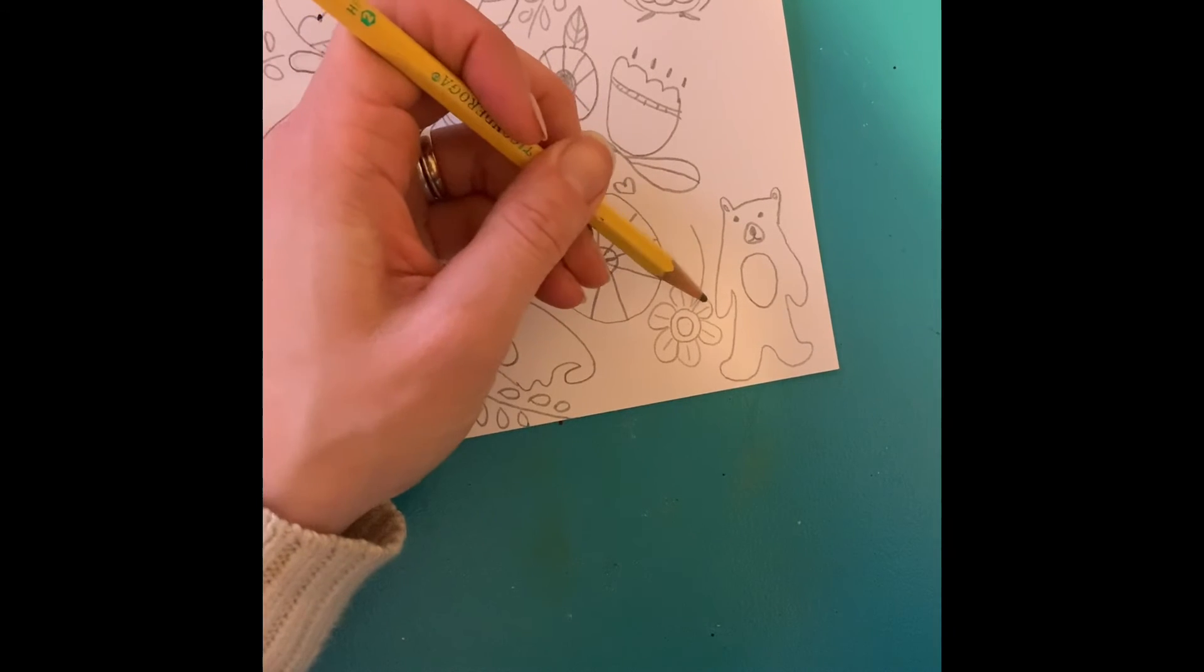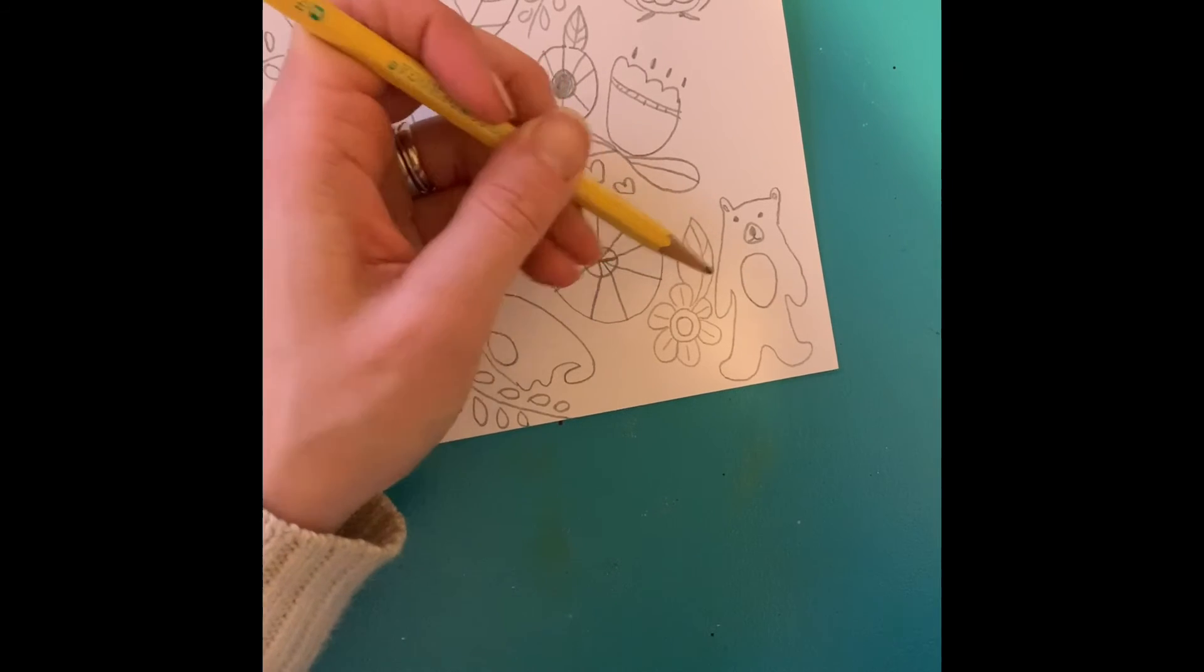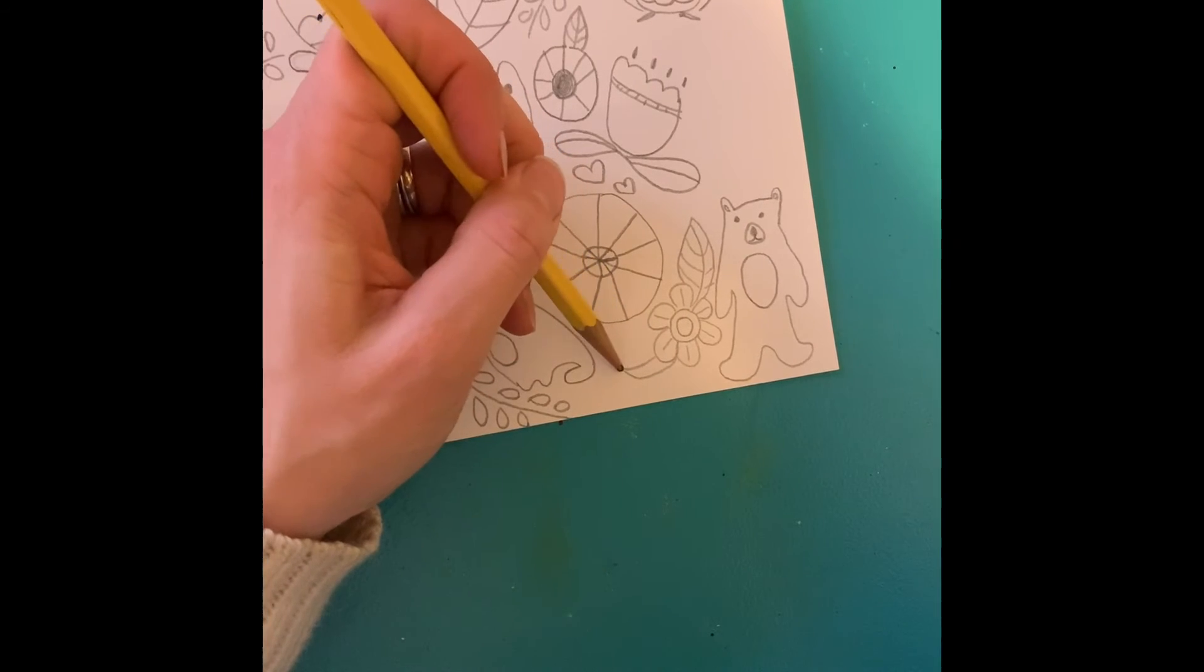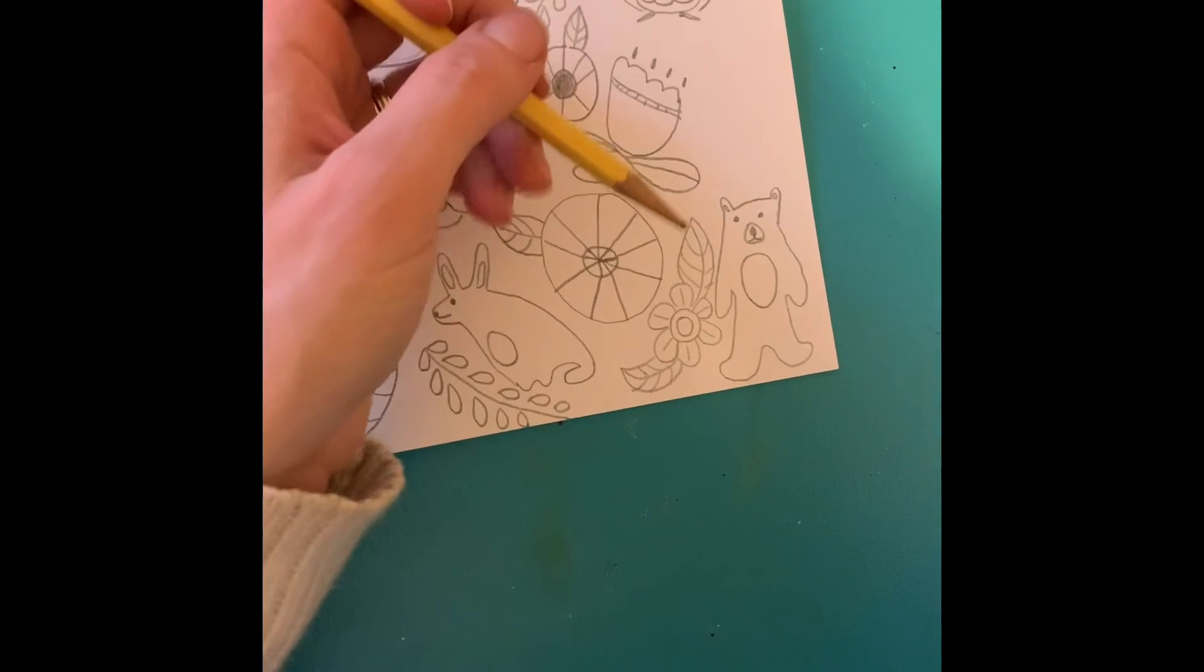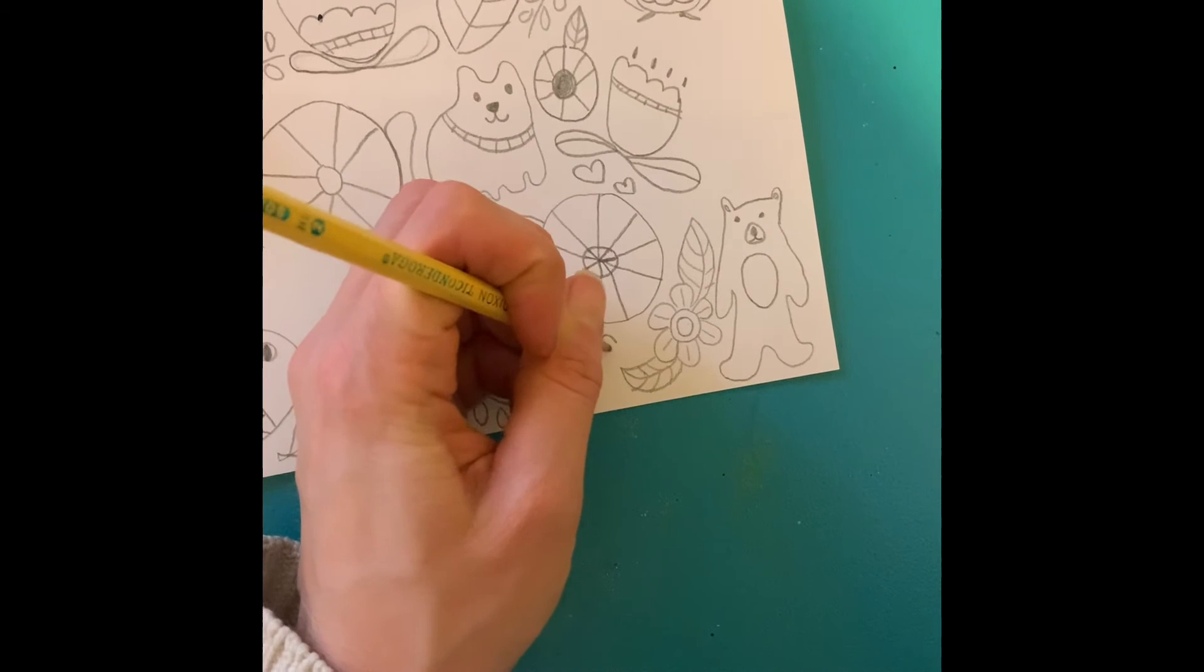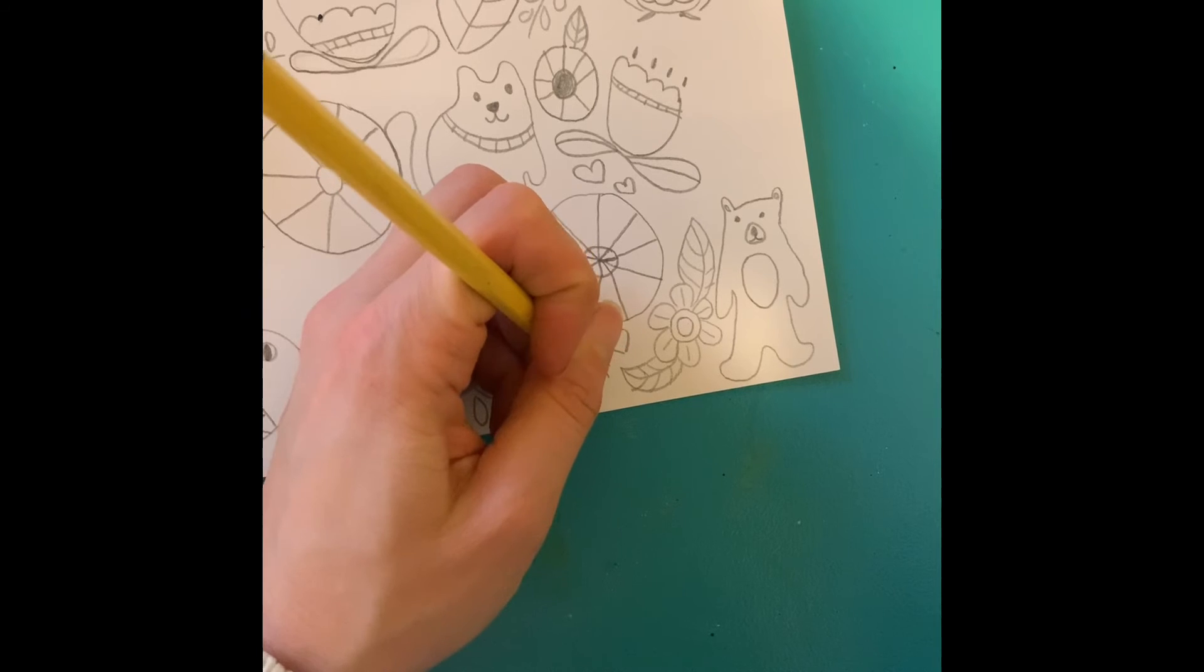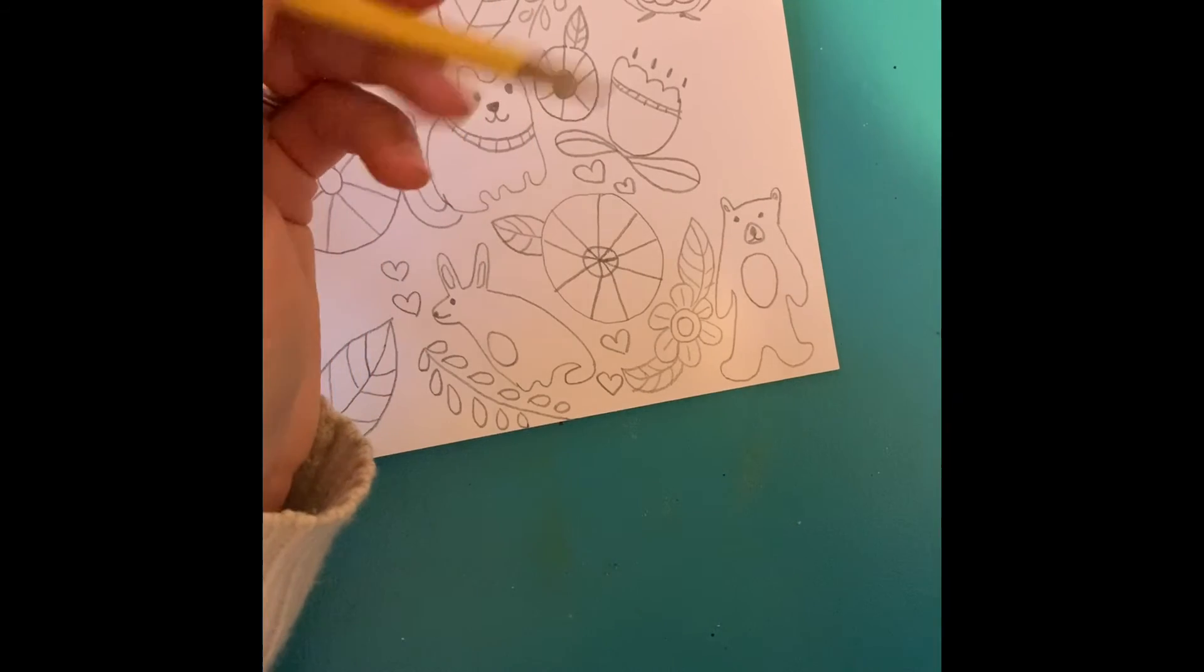I'll add some curved leaves here to take up the space. Some hearts. Some people think hearts are just a girly kind of design but I think they're a pleasing shape to fill in some space. You could use triangles, squares, diamonds.